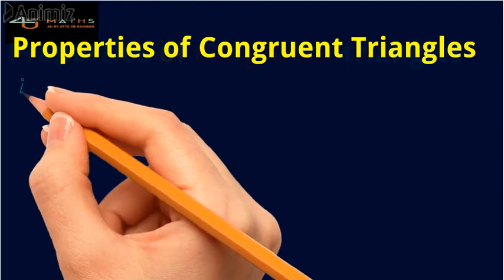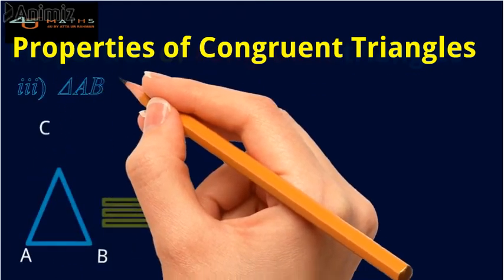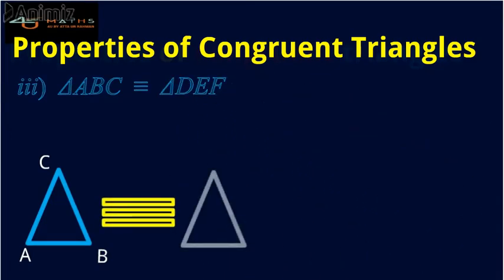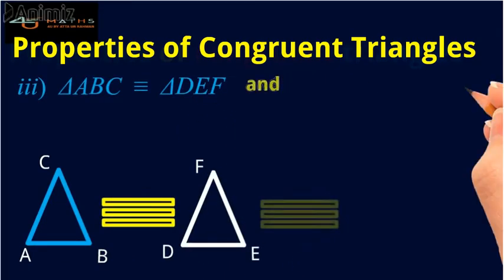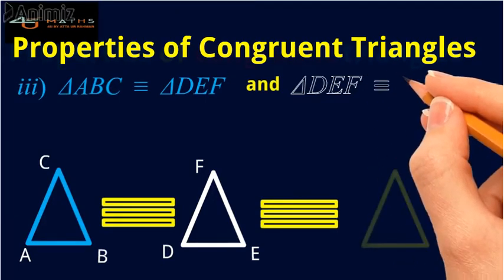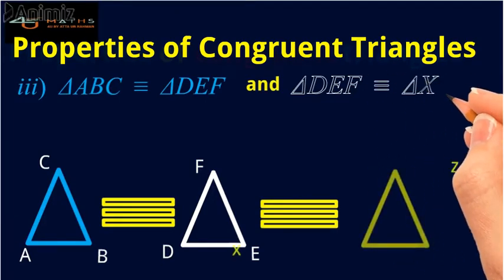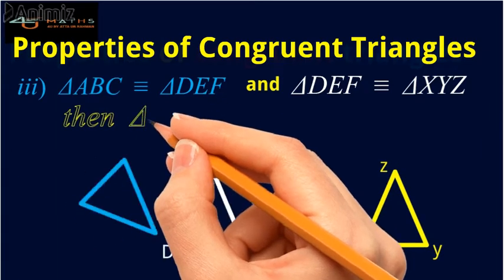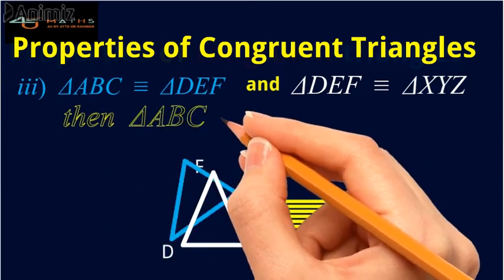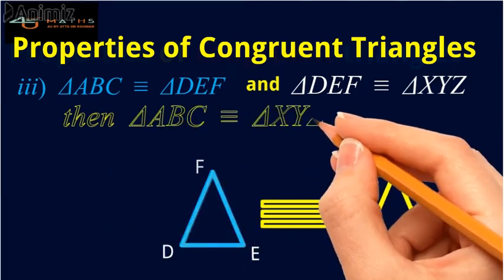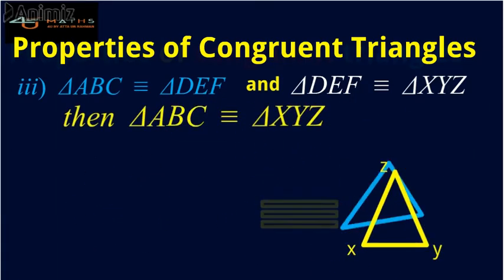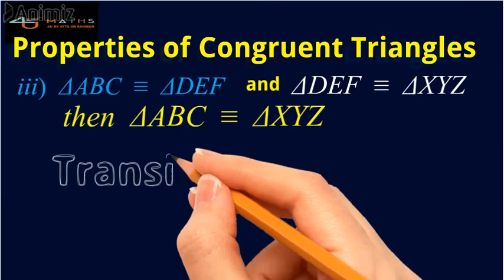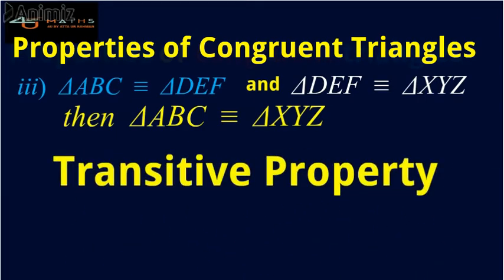Number three: if triangle ABC is congruent to triangle DEF, and triangle DEF is congruent to triangle XYZ, then triangle ABC is congruent to triangle XYZ. This property is called the transitive property of congruence.